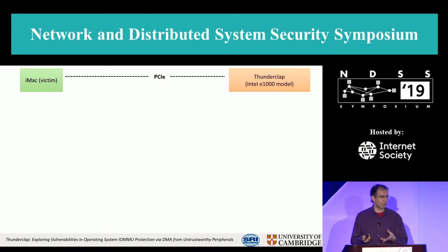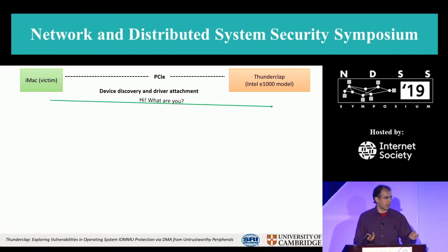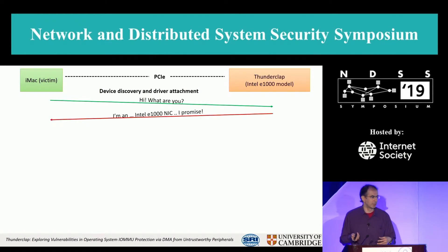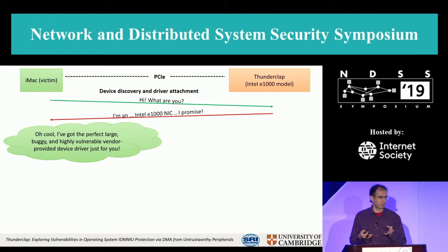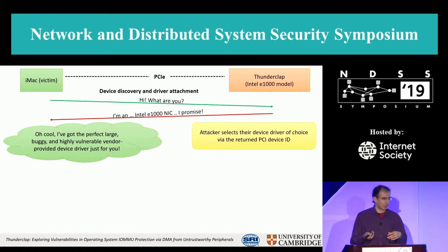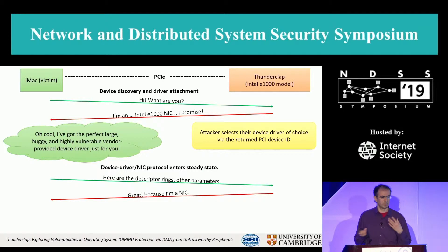We plug in a device over PCI Express or Thunderbolt, the OS asks what kind of device it is, and the device says it's a NIC. The OS looks up its table to work out what device driver to load — so the malicious device has picked the most buggy device driver. Then we start sending some data: descriptor rings, data to send, and so on.